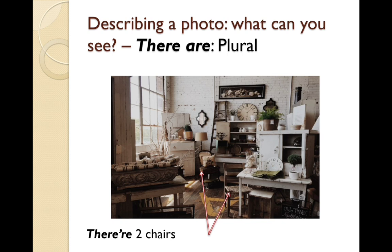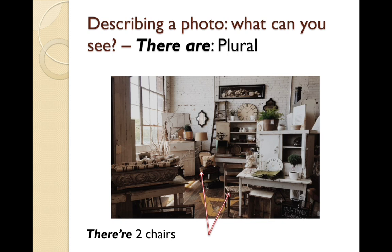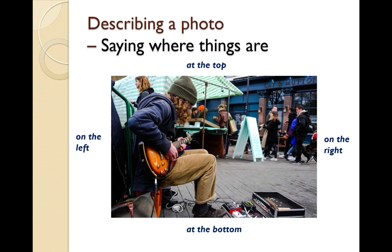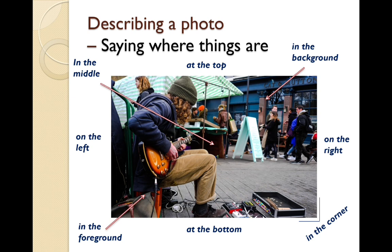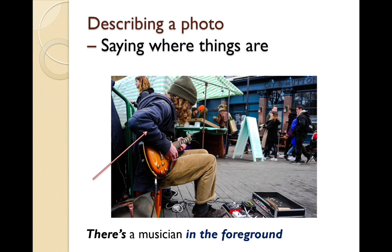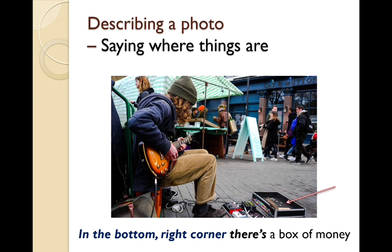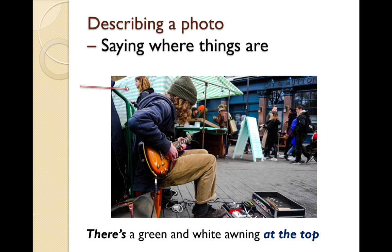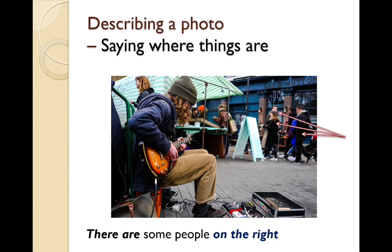There are two chairs. How can we talk about where things are? On the left, on the right, at the top, at the bottom, in the corner, in the background, in the foreground, in the middle. For example: there's a pub in the background; there's a musician in the foreground; in the bottom right corner there's a box of money; there's a green and white awning at the top; there are some people on the right; there's a table in the middle of the picture.